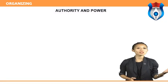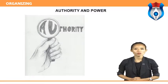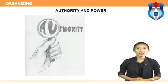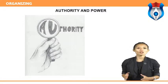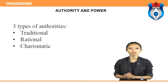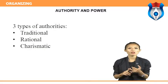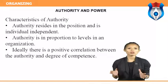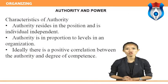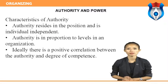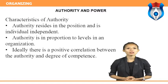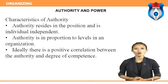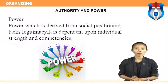Now we will discuss authority and power. Organizations, though rational entities, often do not follow strictly their own well-defined systems, leaving scope for power play and politics. According to Max Weber, there are three types of authority: traditional, rational, and charismatic. Characteristics of authority: authority resides in the position and is individual-independent; authority is in proportion to levels in an organization; and ideally there is a positive correlation between authority and degree of competence.